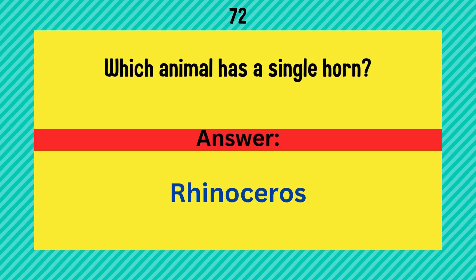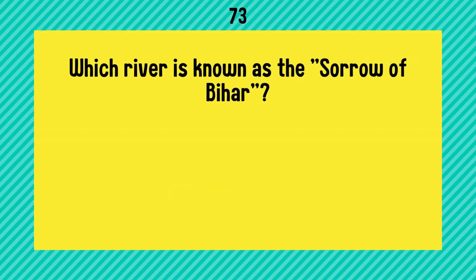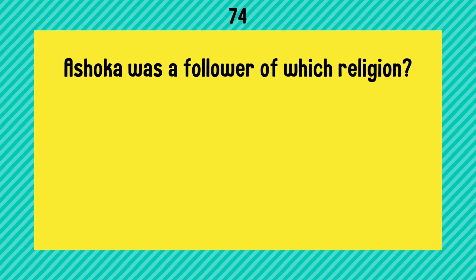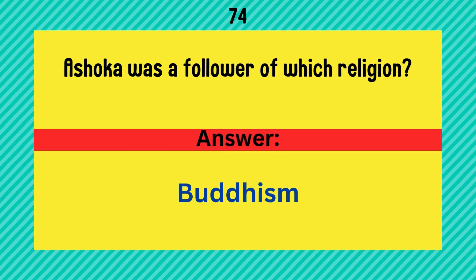Which river is known as the Sorrow of Bihar? Answer is Kosi River. Ashoka was a follower of which religion? Answer is Buddhism.